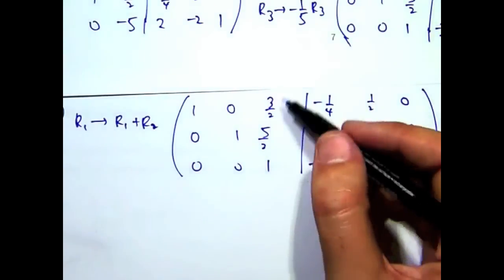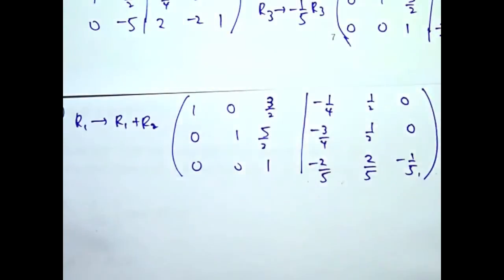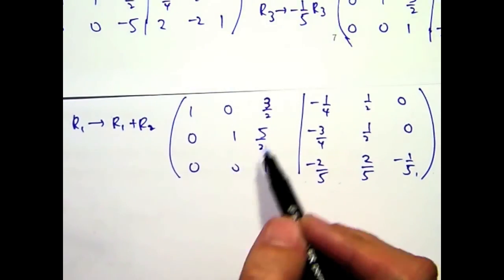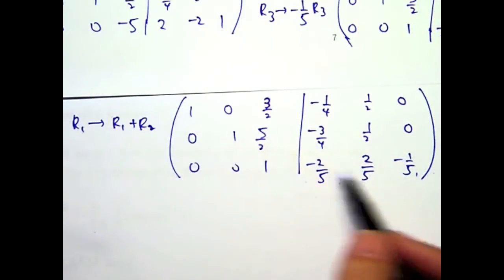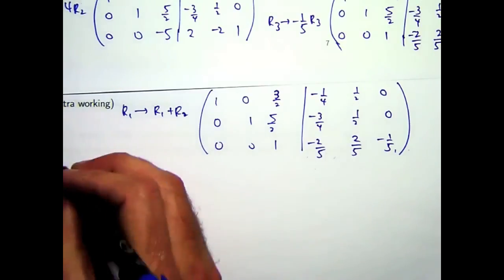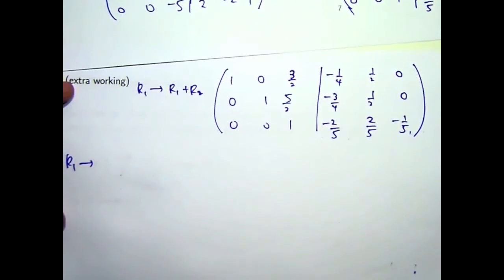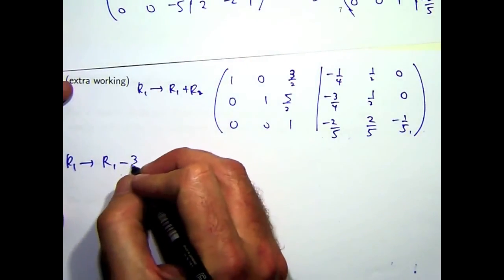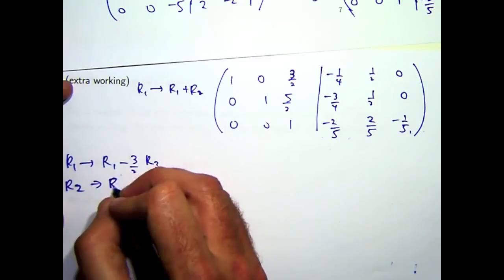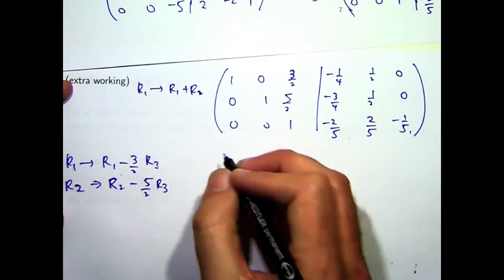So we're almost there now. All we need to do is get these two entries to a zero. So I can do that just by adding in multiples of the third row to the second row and the first row. What I'll do is I'd take away 3 on 2 times the third row from the first row and 5 on 2 times the third row from the second row. So let's do that in one go.